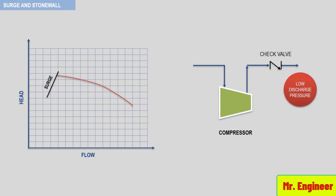This surge cycle will continue until either the head produced by the compressor is increased or the head required by the process is reduced. The quickest way to eliminate surge is to rapidly reduce the discharge pressure by opening a blow-off or recycle valve in the discharge process system.